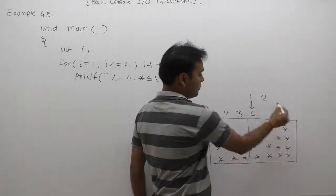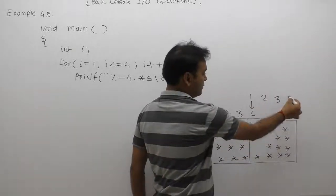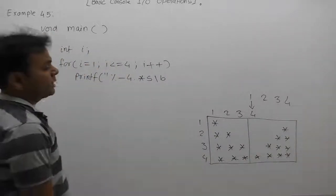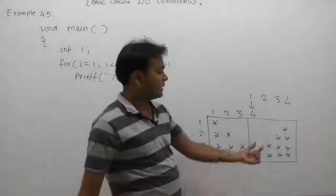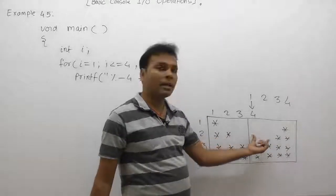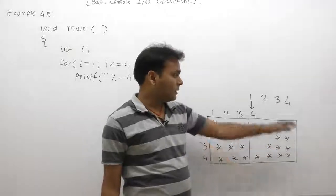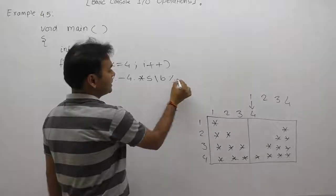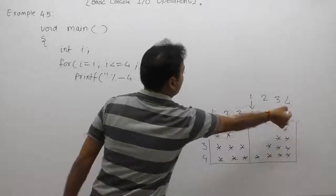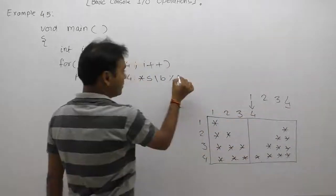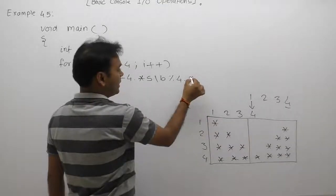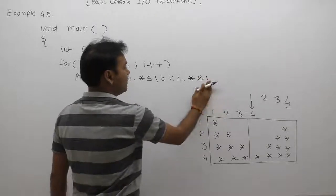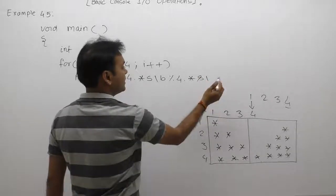One position, two position, three position, four — total width required again. For spacing on the left-hand side or right-hand side we use total width: percent width, again percent four-point-star s. Finally, to change the line we use the newline character backslash n.